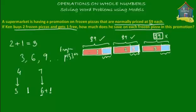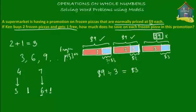Now we need to find out how much each part is. We know that together the blue parts are $9, and we divided that into three equal parts. So each part is simply $3. This means $3 for pizza one, $3 for pizza two, and $3 for pizza three. So the savings is $3 per pizza.